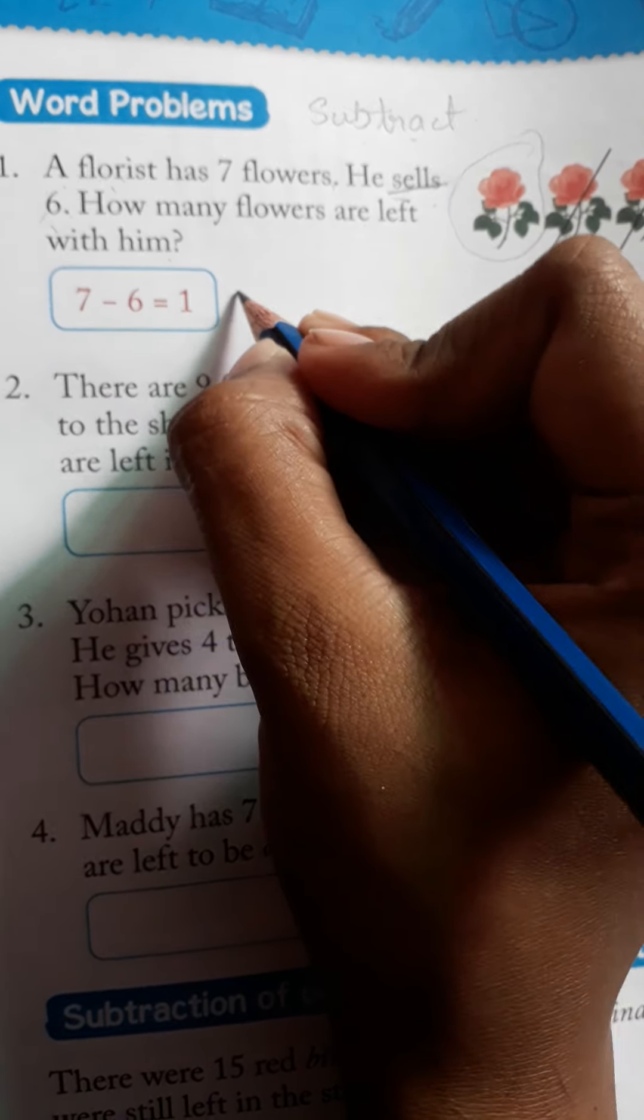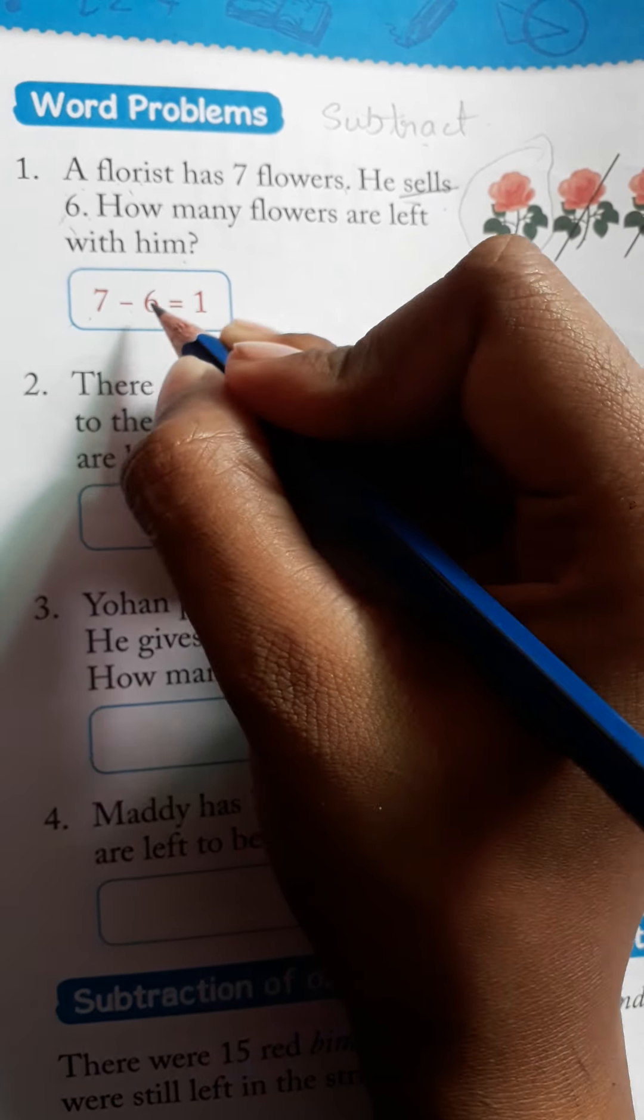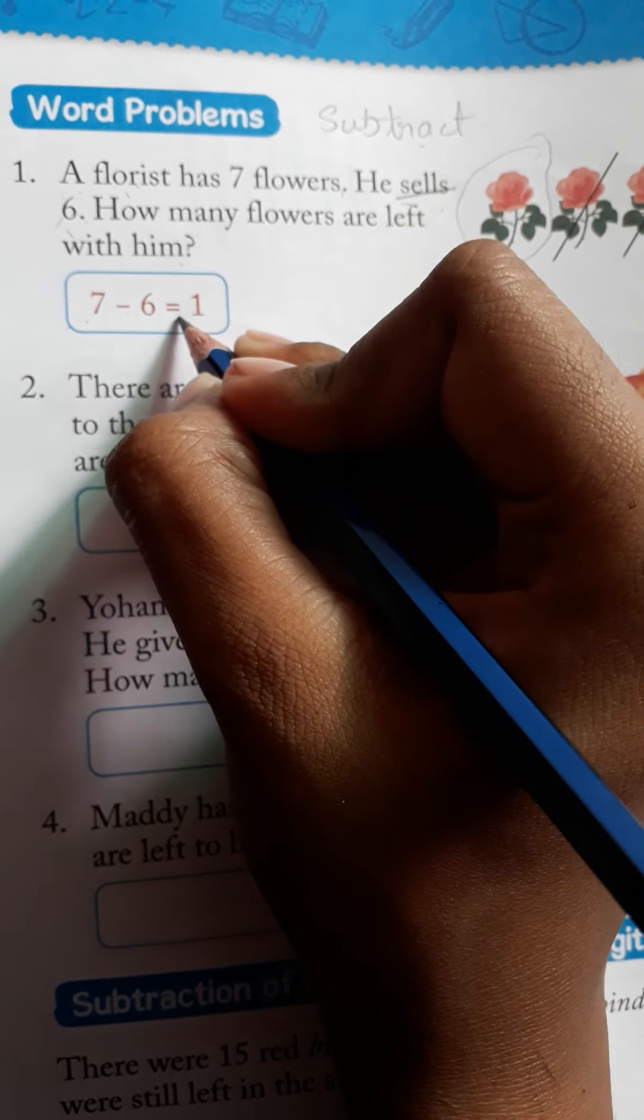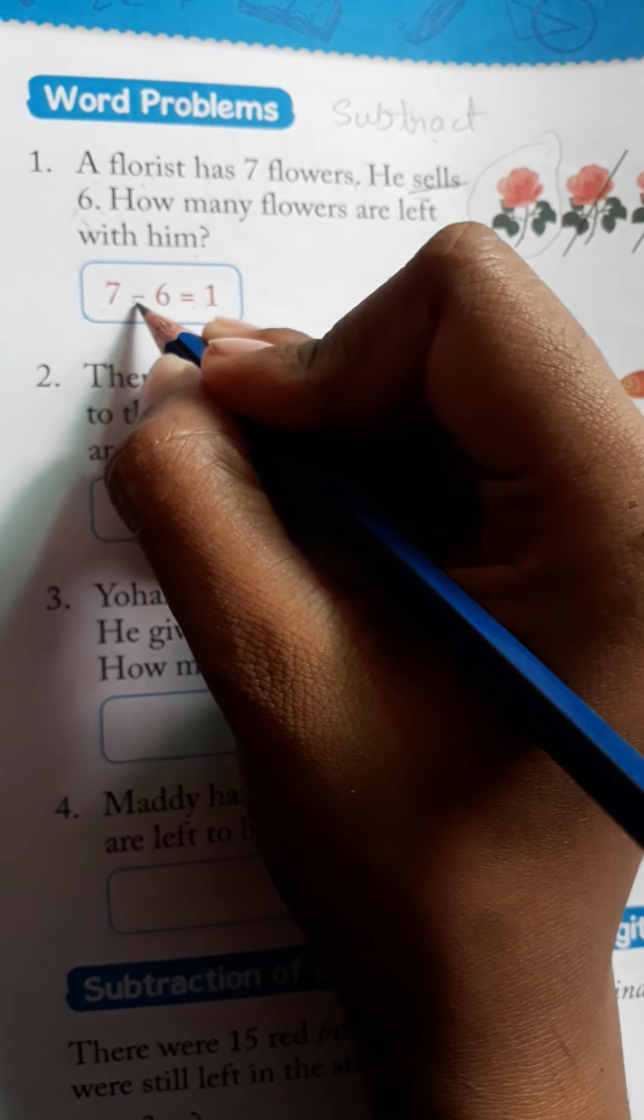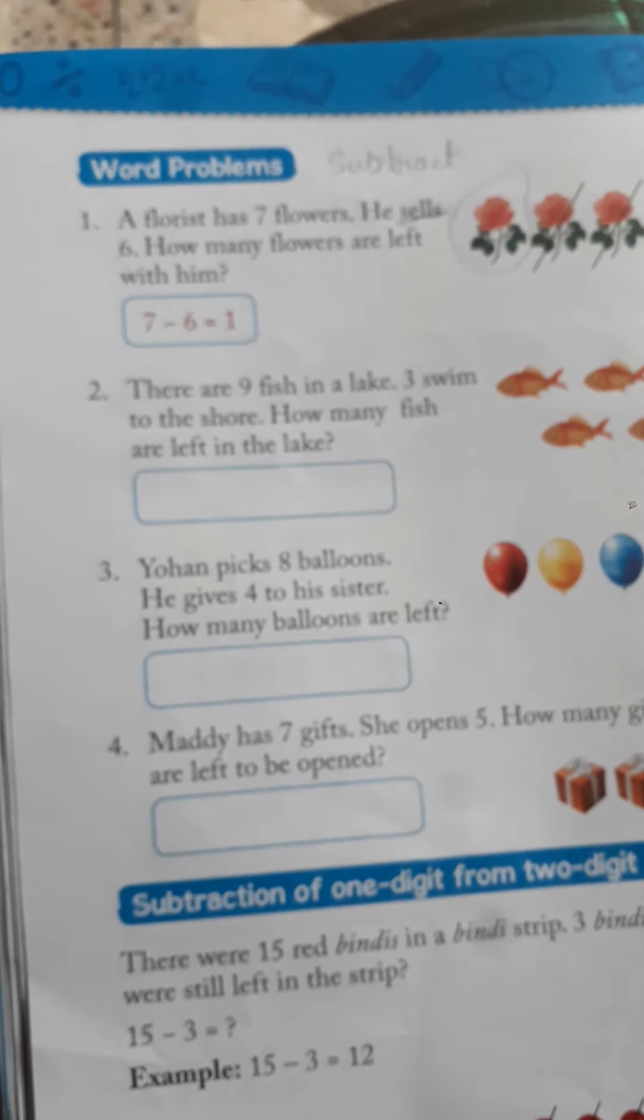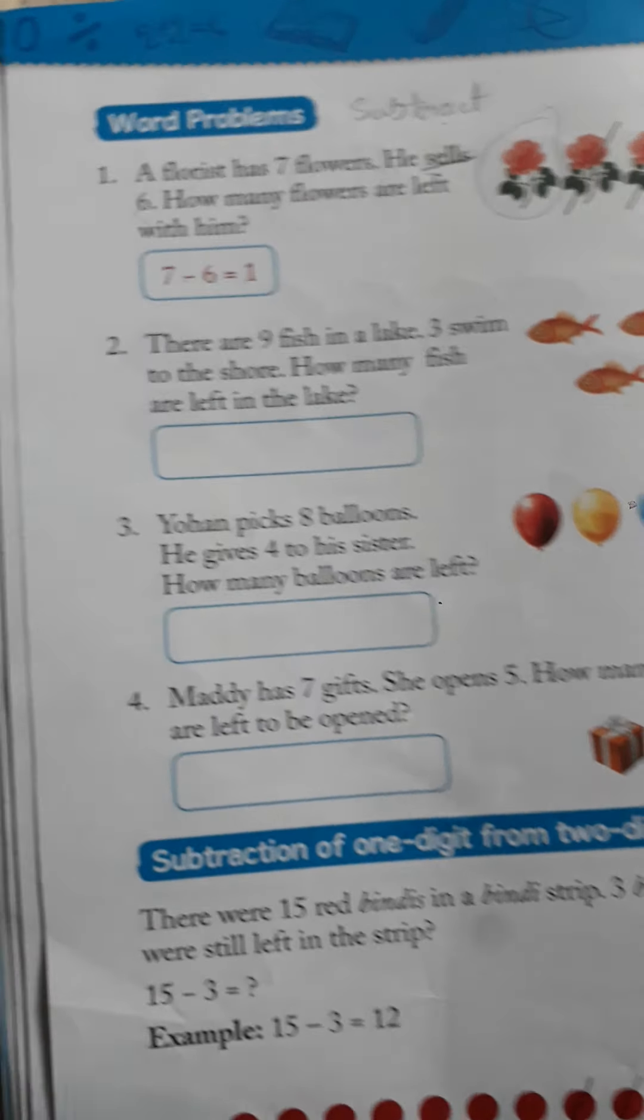So it means a florist has 7 flowers, he sells 6 flowers, equals 1. And why did we put minus? Because 6 are taken away. He has 7 flowers, so he has taken away from his own stock.